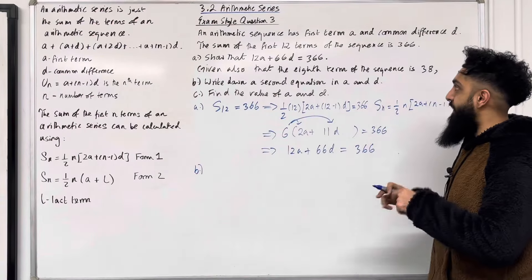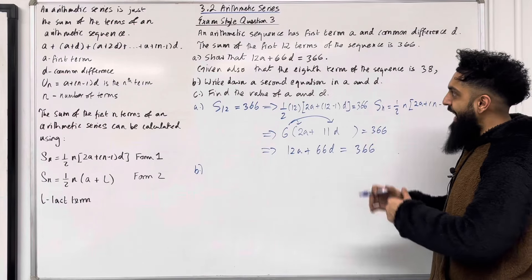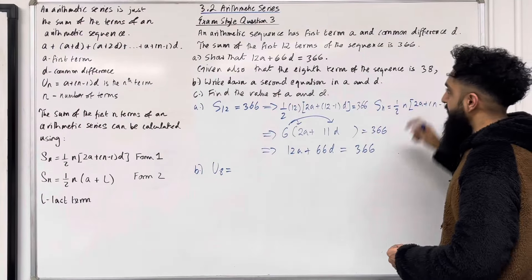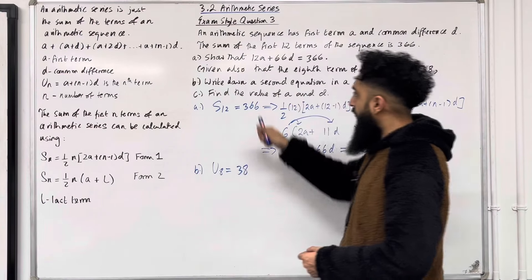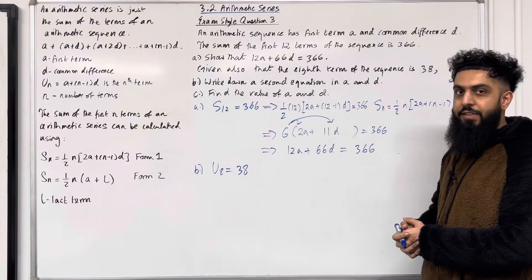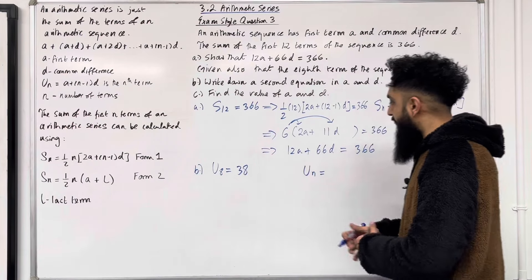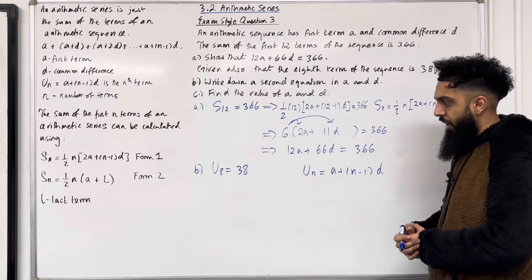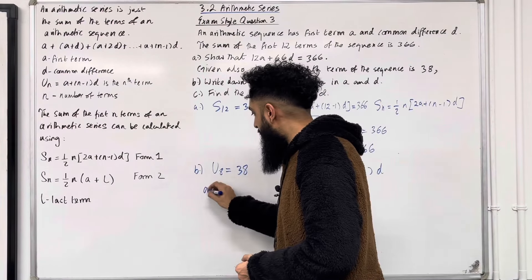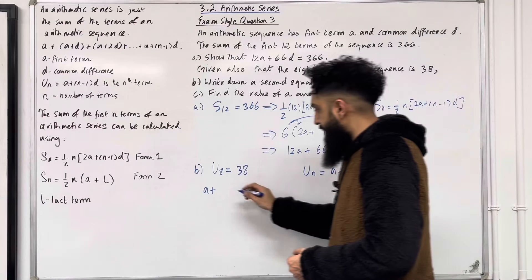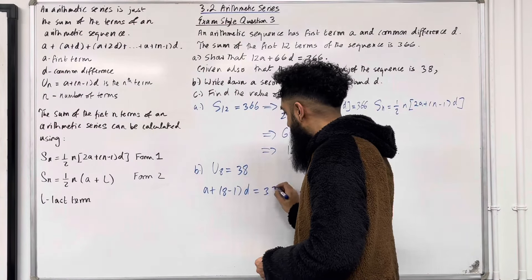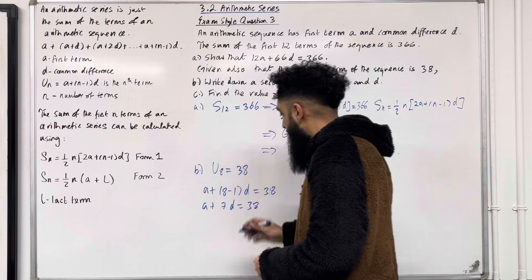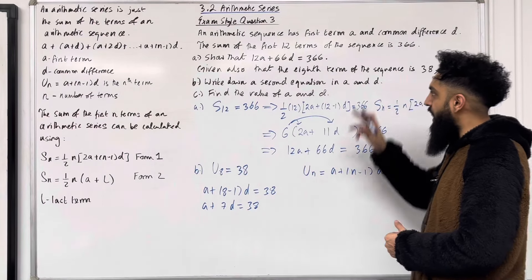Part B: given also that the 8th term is 38. Using the Nth term formula A plus N minus 1 times D with N equals 8: A plus 7D equals 38. That is the second equation in A and D.